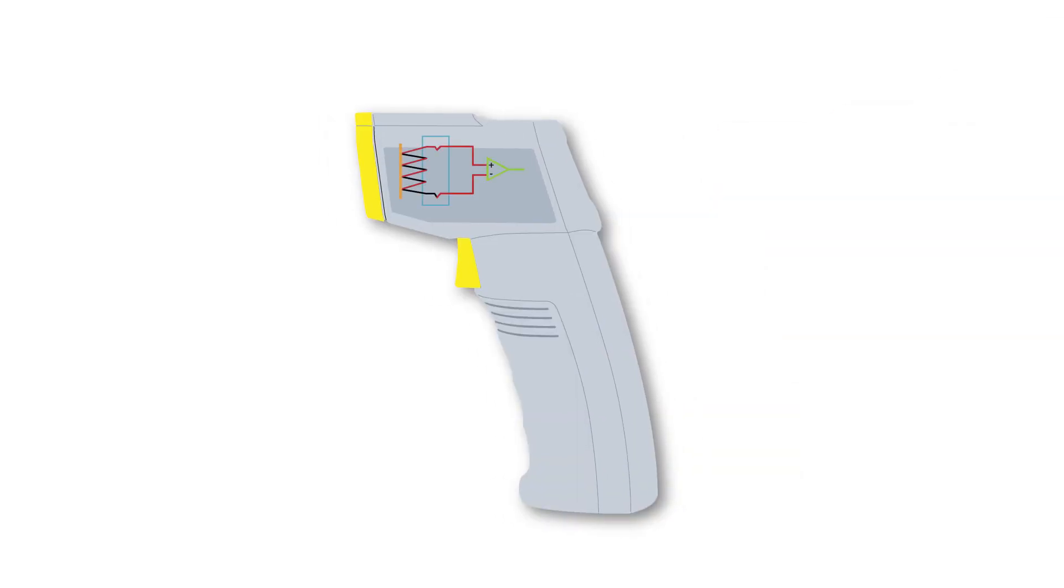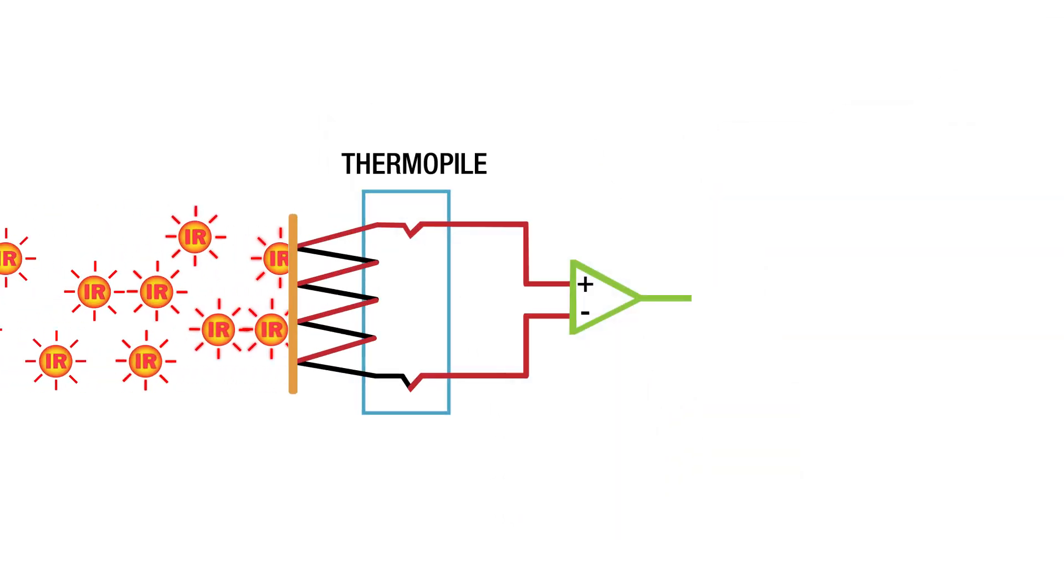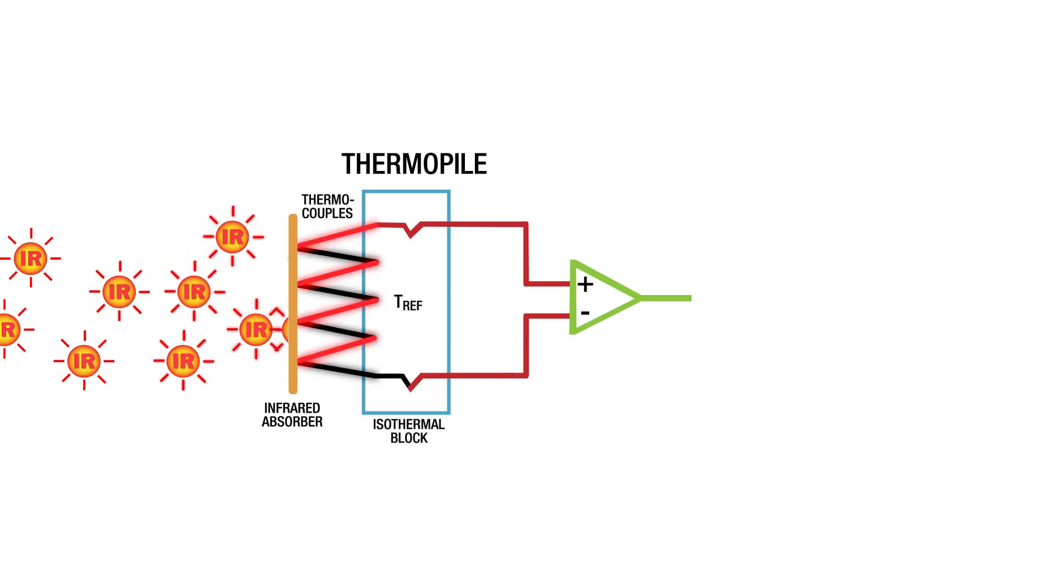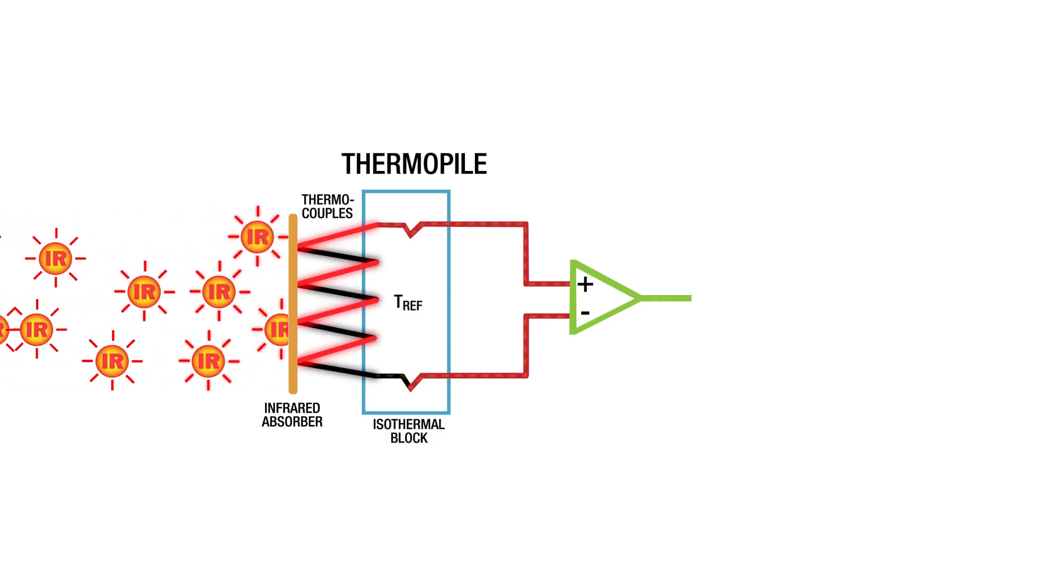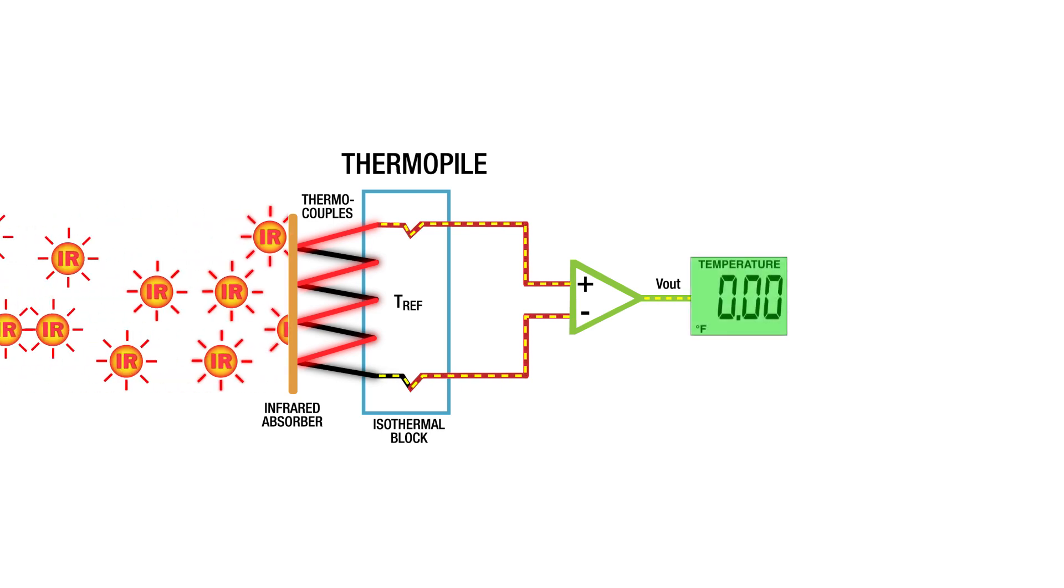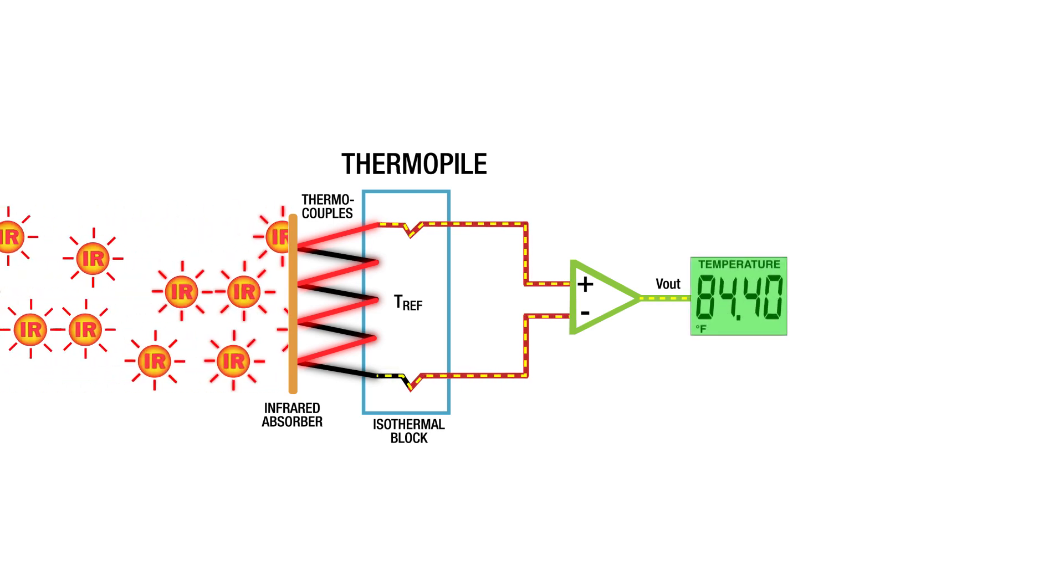An infrared thermometer uses a sensor called a thermopile, which turns the incoming infrared radiation into heat using tiny thermocouples. The thermocouples convert that heat into an electrical signal, which is measured and displayed on the screen in the form of a temperature reading.